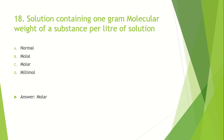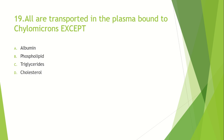Which substance is transported in plasma bound to chylomicron — except: Option A: Albumin. Option B: Phospholipid. Option C: Triglyceride. Option D: Cholesterol. The answer is Albumin — it is not transported in chylomicrons.